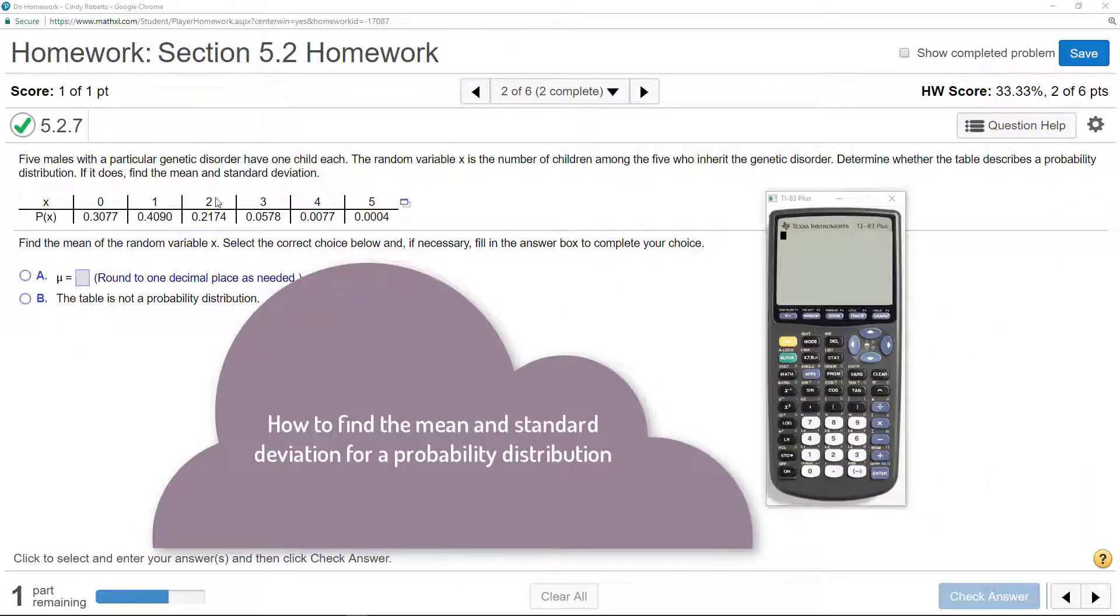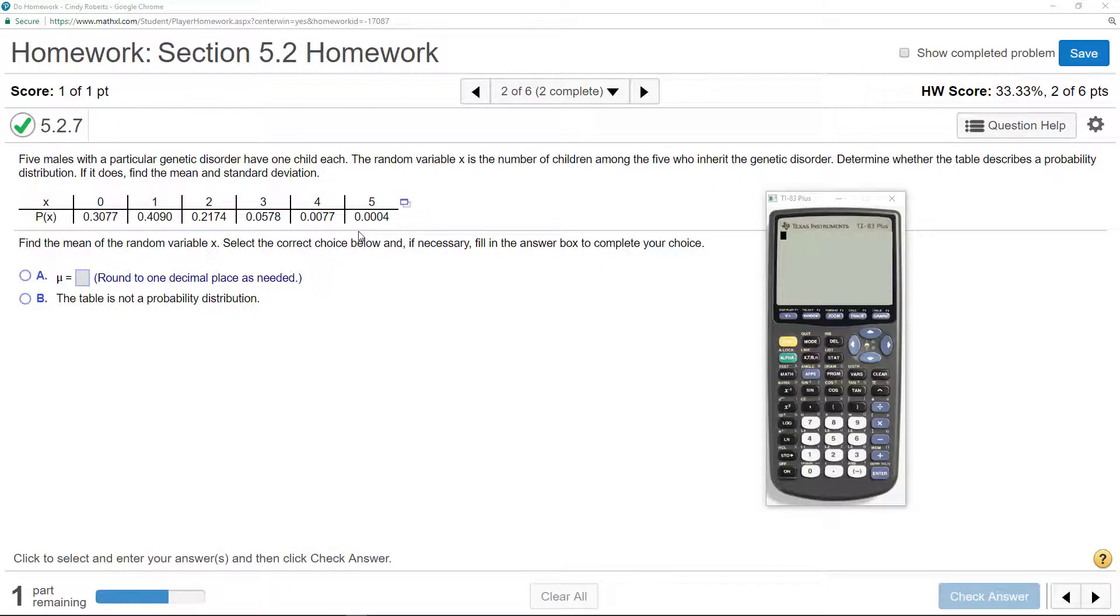Okay, so I have some data here. I have this random variable, and I have some probabilities, and it's asking, so the random variable is the number of children among the five who inherit this genetic disorder.